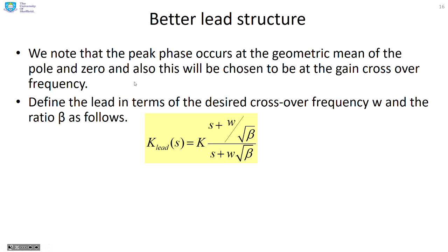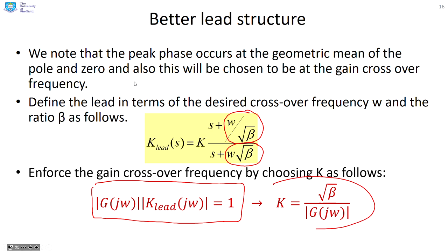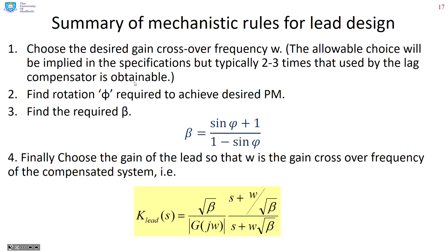How do you construct the lead in practice? The peak phase occurs at the geometric mean of the pole and zero, and this is chosen to be at the gain crossover frequency. We define the lead in terms of the desired crossover frequency omega and ratio beta: the zero is at omega divided by the square root of beta, and the pole is at omega times the square root of beta — because clearly their geometric mean is omega. Then we enforce omega to be the gain crossover frequency by satisfying the modulus condition: G·K equals 1 at that frequency. Therefore K equals root-beta over the modulus of G(j·omega).